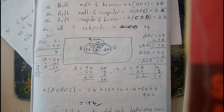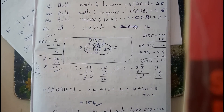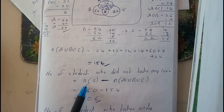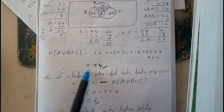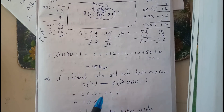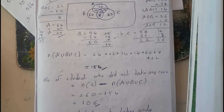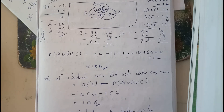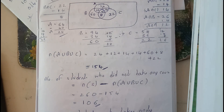If he asks for the number of students who are not interested in even a single course: total minus those who know at least one. 260 minus 154 equals 106. So 106 students didn't take a single course. This is the conclusion of sets. In further videos we will go through mathematical induction. I hope this video helps you. Thank you for watching.